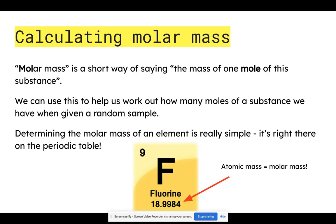Molar mass is a short way of saying the mass of one mole of a substance. When you see the word molar mass, it means mass of one mole. We can use this to work out how many moles of a substance we have when we're given a random sample.